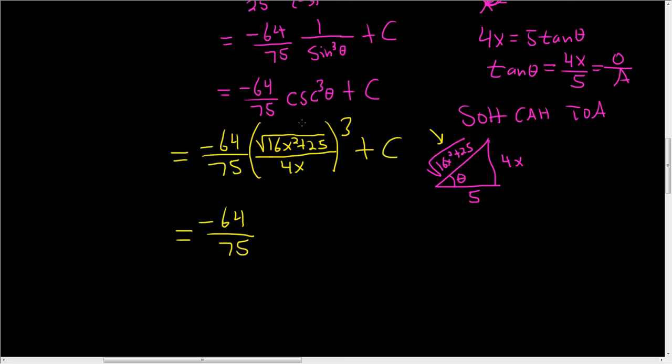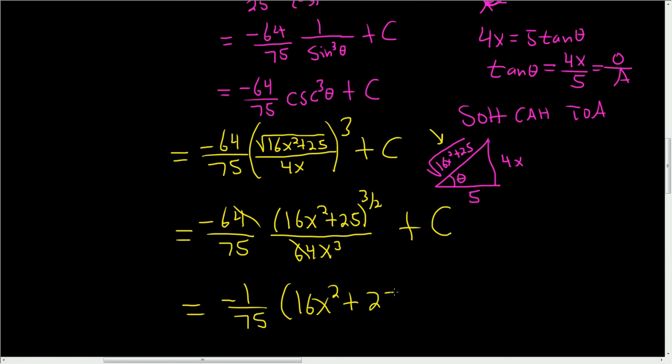Let's keep going. This is equal to negative 64 over 75. Let's think of this square root as being raised to the 1 half power. So we can write this as 16x squared plus 25 to the 3 halves. Right? 3 times 1 half is 3 halves. And then here, we cube the 4, so we get 64, and we cube the x. Let's not forget our beautiful plus c. And so this is equal to, at last, negative 1 over 75, 16x squared plus 25 to the 3 halves plus c. Super rush video, but you kind of have to. Otherwise, a problem like this ends up becoming a 20-minute video. So I hope that made some sense.